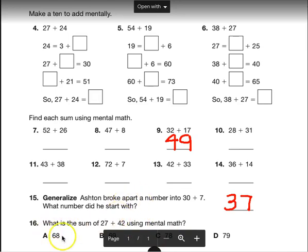Let's look down at this problem. Sorry, it's covered a little bit. But it says, what is the sum of 27 plus 42 using mental math? And for these problems, they give you 4 different, so it's a multiple choice problem. And they give you 68, 69, 78, and 79.